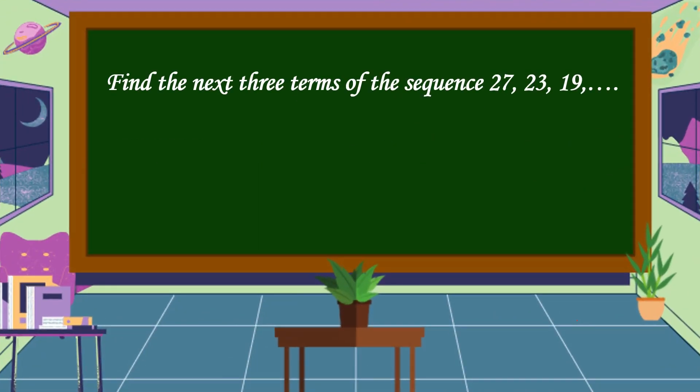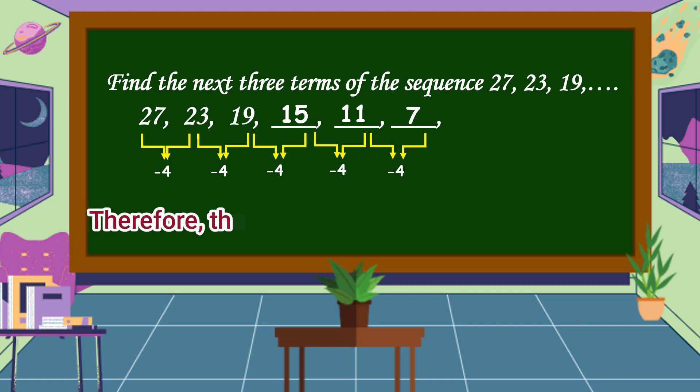Find the next three terms of the sequence 27, 23, 19, and so on. From 27 to 23, the pattern is minus 4. From 23 to 19, the pattern is still minus 4. So 19 minus 4 equals 15, 15 minus 4 equals 11, 11 minus 4 equals 7. Therefore, the next three terms are 15, 11, and 7. The pattern rule is minus 4.